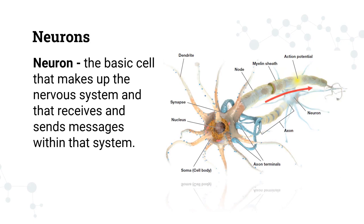Let's start with a neuron. As we learn from biology, a cell is considered the basic unit of life. Neurons are like cells, but they are mostly found in the nervous system — they are the building block of the nervous system. A neuron is defined as the basic cell that makes up the nervous system and that receives and sends messages within that system. Basically, there are billions of neurons in our body and their connections allow us to understand, interpret, and act on certain information.